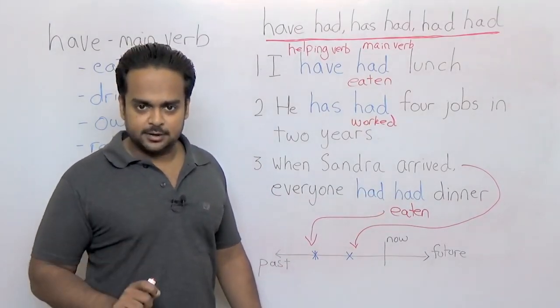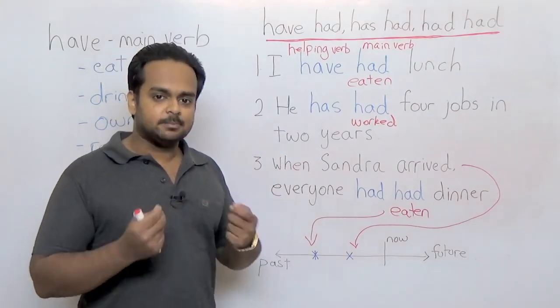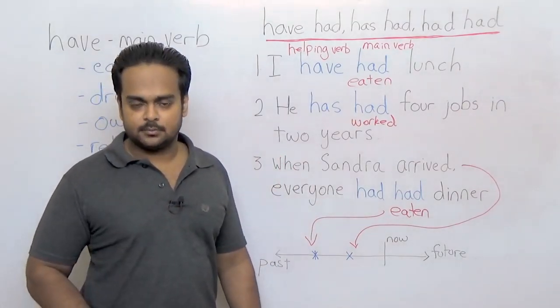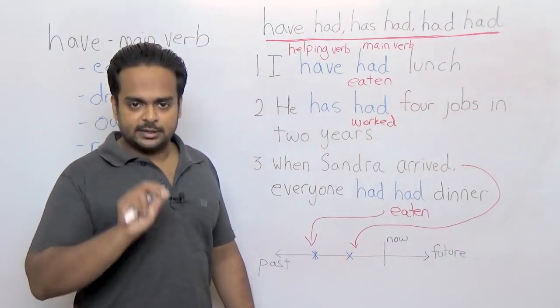So because of that, maybe Sandra did not get any food because there was no food left over. Everyone had eaten dinner or everyone had had dinner. So there was no more food to give to Sandra. So the purpose of this had is only to show that this action happened first. So you see once again, the two hads are completely different words and they have completely different meanings. Okay, before we close this lesson, I want to tell you two things very quickly.